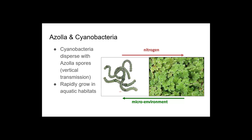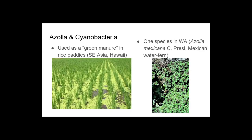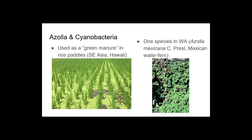Azolla and cyanobacteria are really cool. They're one of the few plant mutualisms where the symbiont, which in this case is a cyanobacteria, actually disperses with the plant reproductive structures which in the case of Azolla, which is this cute little water fern, are spores. Together they can rapidly grow in aquatic habitats. They are used widely in rice paddies in Southeast Asia and Hawaii, so probably less relevant for out here. There is one species that occurs in Washington, Azolla mexicana, which looks like this. This is all that I am going to say about Azolla, other than I think they're really adorable plants.